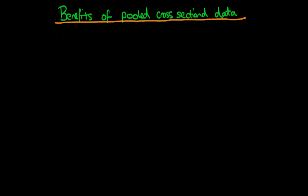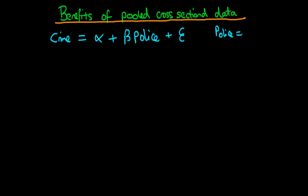The idea here is that if we have a particular model which we're interested in testing — for example, looking at the various factors which affect crime — and we're interested in whether a particular type of policing policy actually had an effect to lower the crime rate. The variable 'police' takes on a value of 1 if that city actually instituted that policy, and 0 otherwise. We're talking about individual cities here.